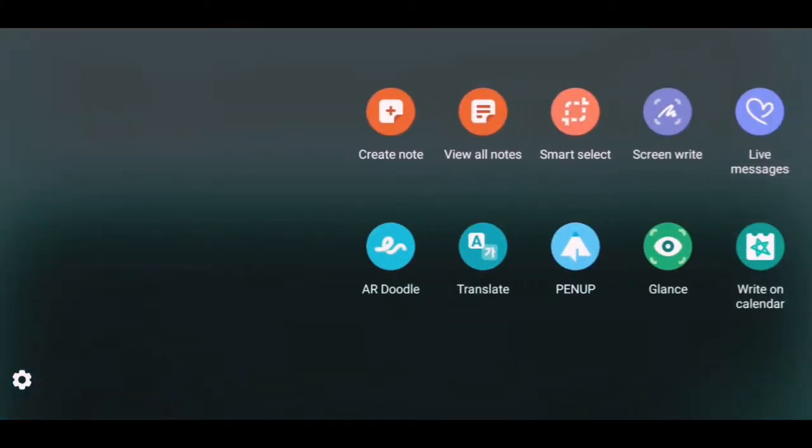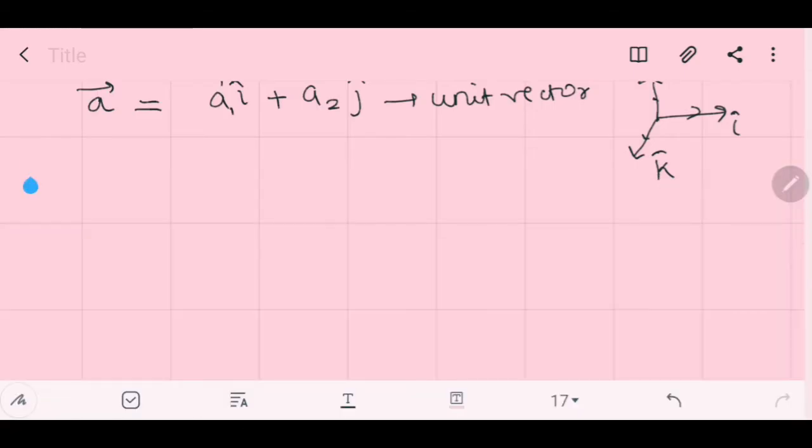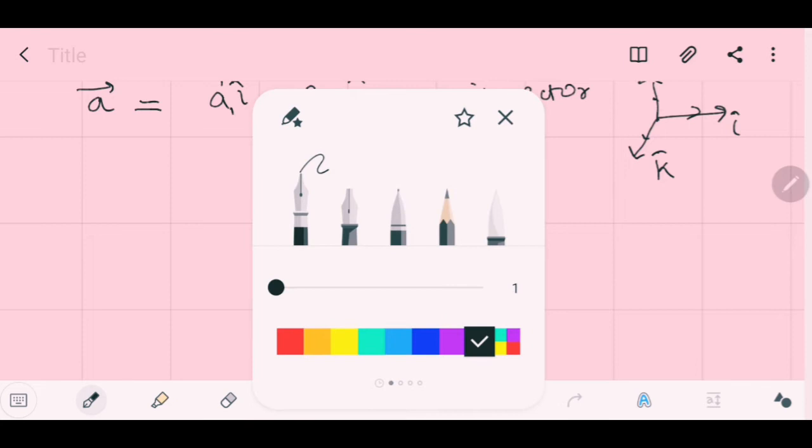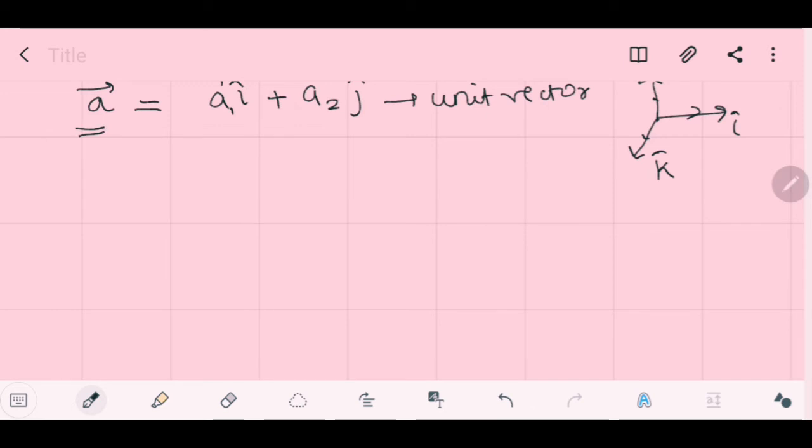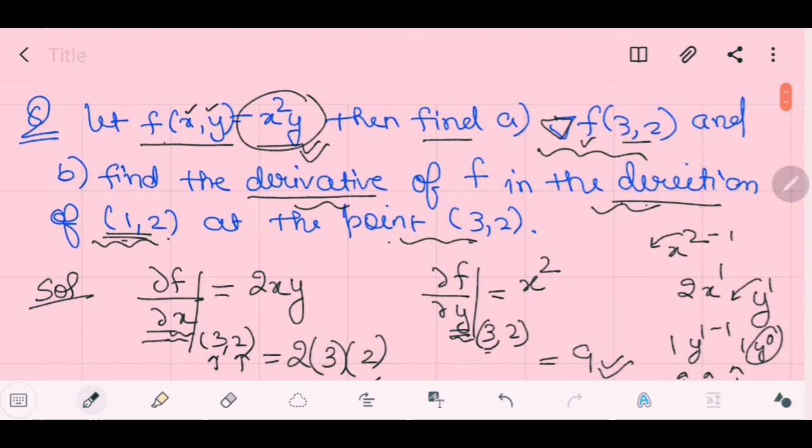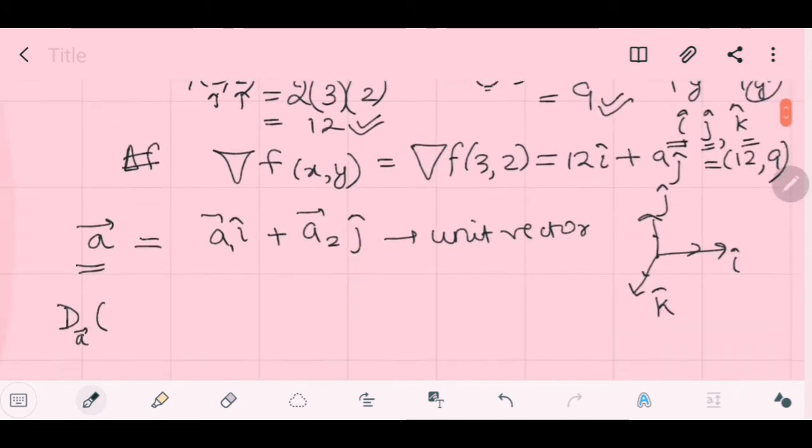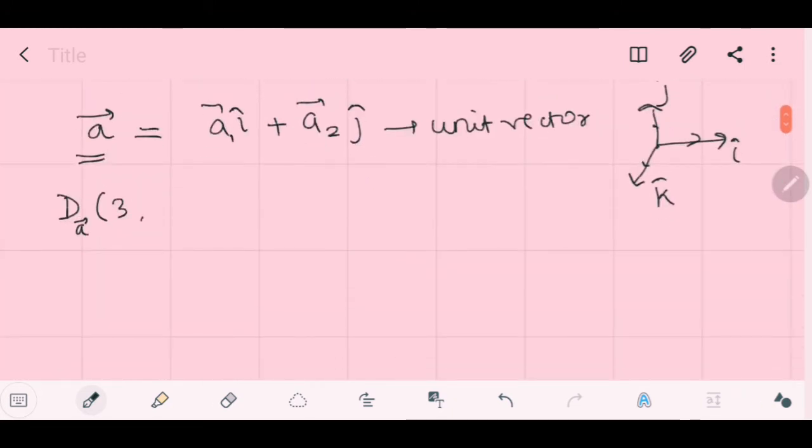So this is how, whenever you have to find out the directional derivative, you always need to substitute or consider this as a vector. Now, if you see, you have this vector a. Now, consider this, you need to find out the directional derivative of this a at point, the point is, at the point (3, 2).